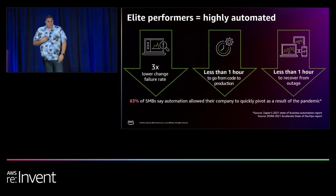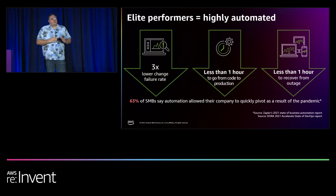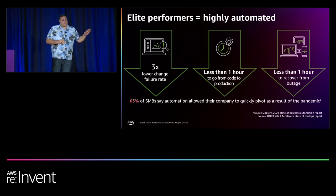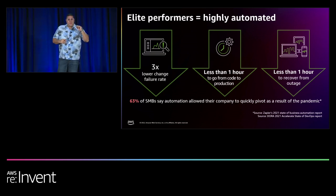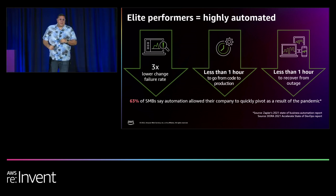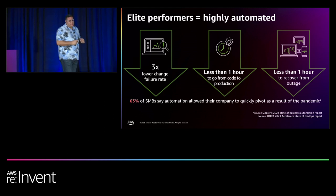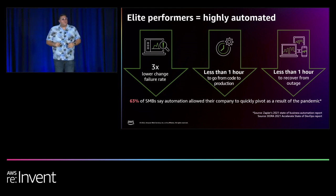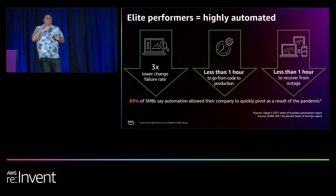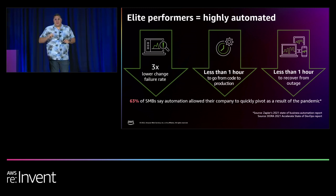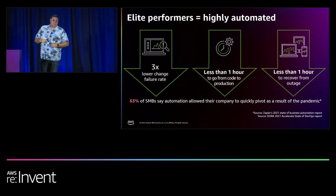Amazon is a data-driven company, so let's look at statistics from a 2021 State of DevOps report highlighting the benefits of being highly automated. Respondents were classified into four categories, and we'll focus on those called 'elite' — organizations with a high degree of automation in their development lifecycle and operations. Elite performers have a three times lower change failure rate, meaning they can make changes to their environment without disruption. The people in those organizations are not working nights and weekends to roll back or implement changes.